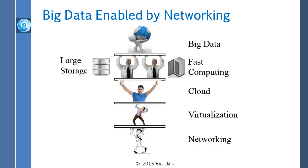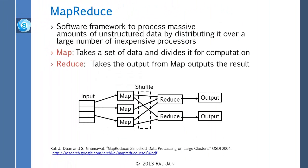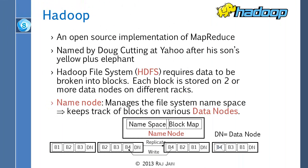The next slide is MapReduce — we have already covered it. What we need to do for big data is divide the work into many computers, and we want to make sure that the computers doing the work also have the data. On this slide we show the computers doing the work — we call them task nodes. And on the next slide we have the data node, where the data is.